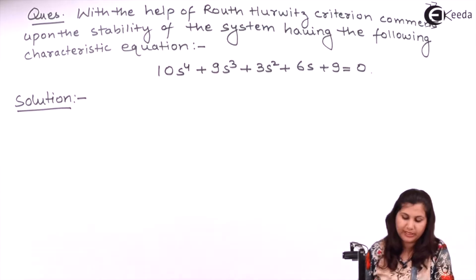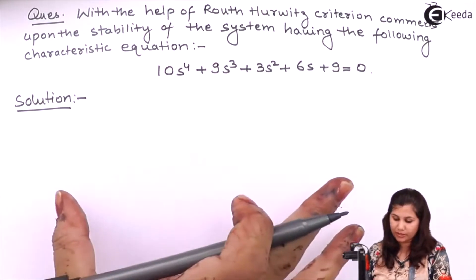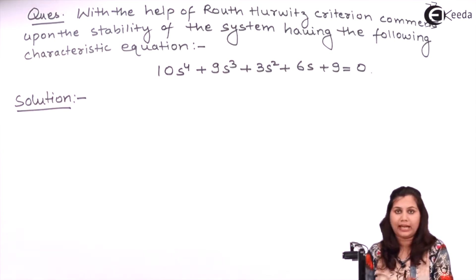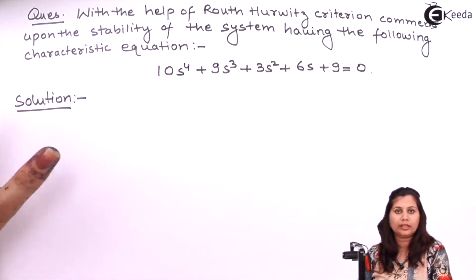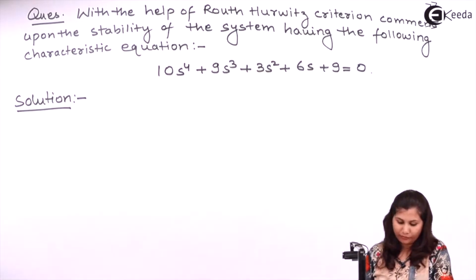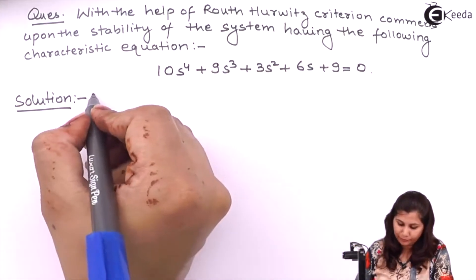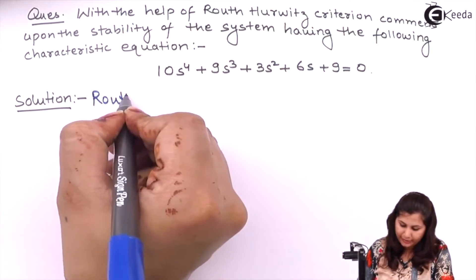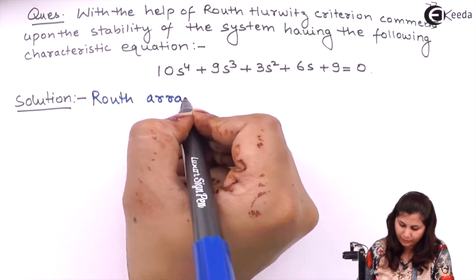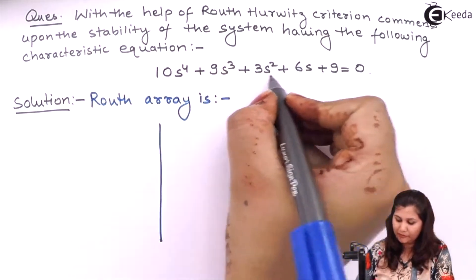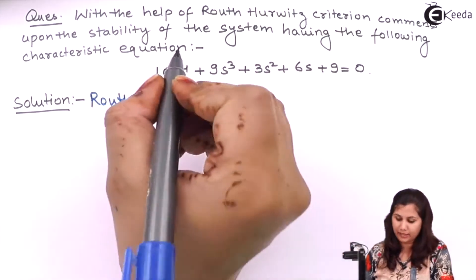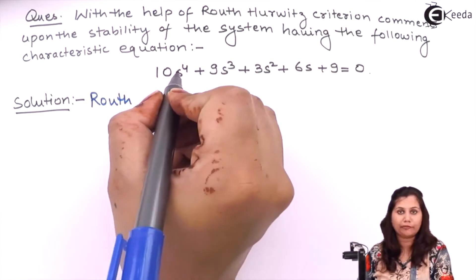For Routh-Hurwitz criteria, we first have to determine the characteristic equation, which is given to us. The second step is to form the Routh Array. So let's find the Routh Array for this system. The highest power of s in this characteristic equation is s to the power 4.